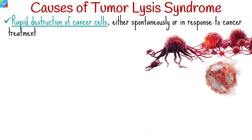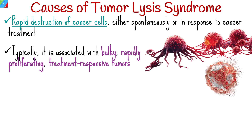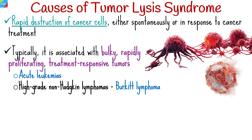The primary cause of Tumor Lysis Syndrome is the rapid destruction of cancer cells, either spontaneously or in response to cancer treatment. Typically, it is associated with bulky, rapidly proliferating, treatment-responsive tumors, commonly associated with hematologic malignancies such as acute leukemias and high-grade non-Hodgkin lymphomas such as Burkitt lymphoma.